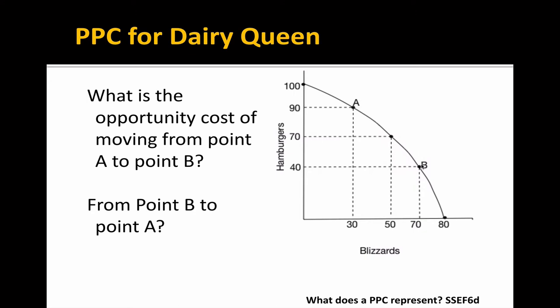PPCs show opportunity cost — what you give up to move from one point to another along a PPC. So if I'm producing right now at point A, that means I'm making 90 hamburgers and 30 blizzards. But let's say it gets to be afternoon and I move to producing point B — now I'm producing 70 blizzards and 40 hamburgers. So the question is, what's my opportunity cost?